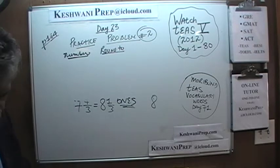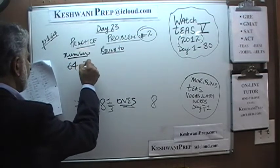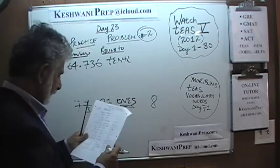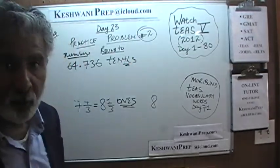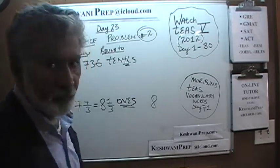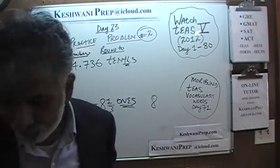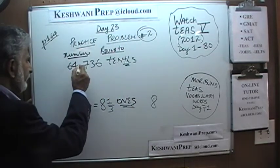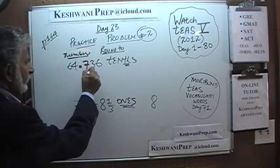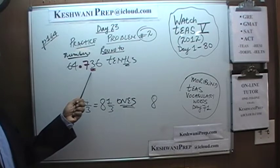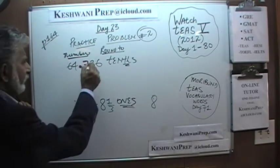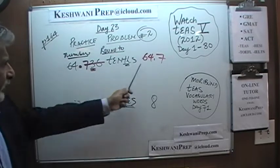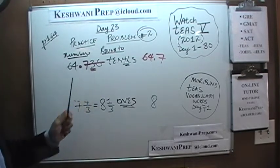Next: 64.736 rounded to the nearest tenth. Let's look at the tenths digit first. Here is the decimal, and this is the tenths digit. We only have to look at one digit to the right of it. Is it five or more? No, it is not five or more, which means we just ignore it. 64.736 becomes 64.7 because the digit to the right is not five or more.